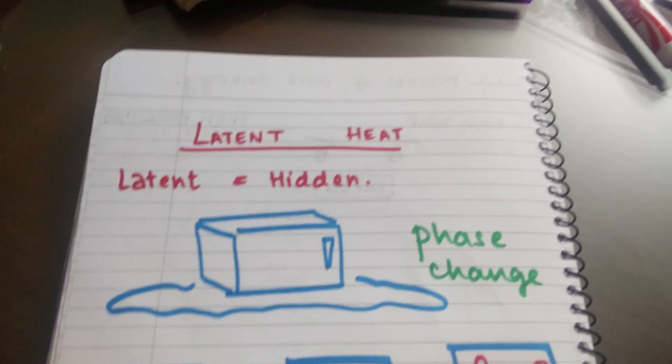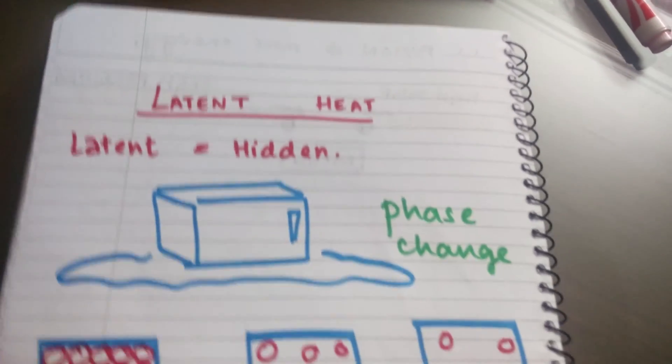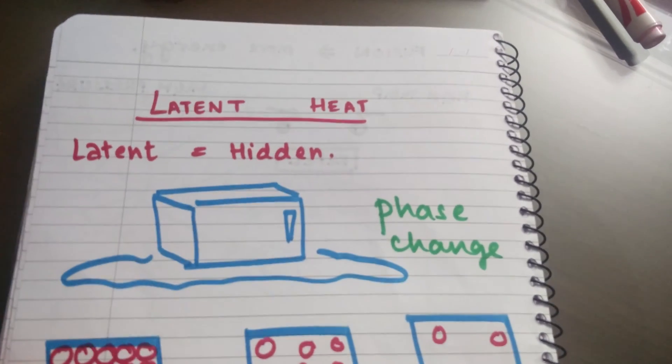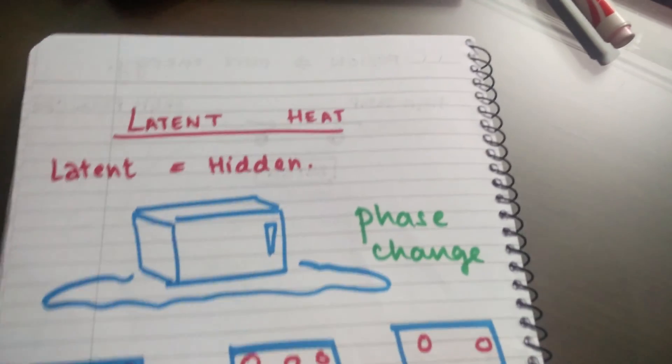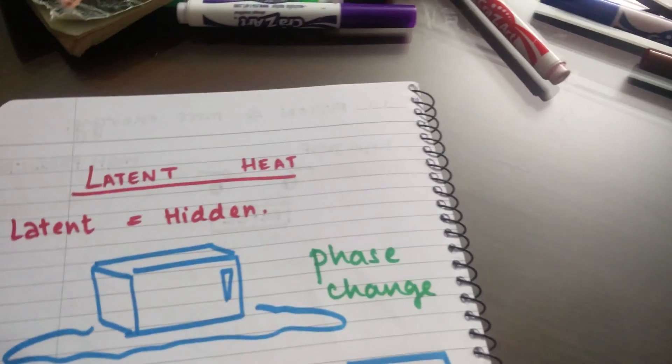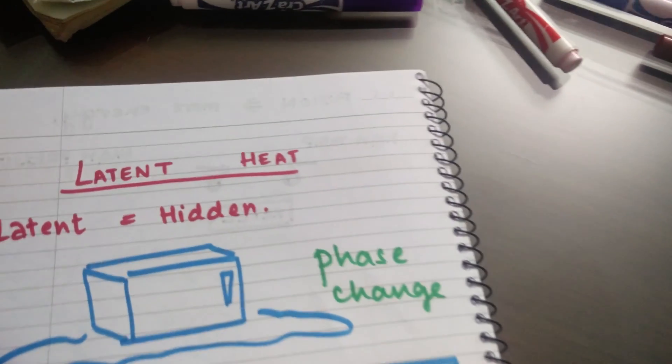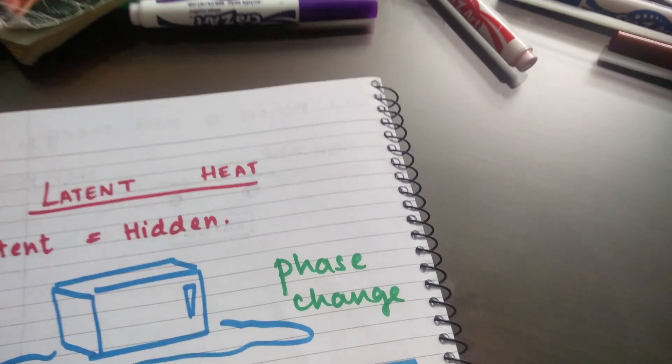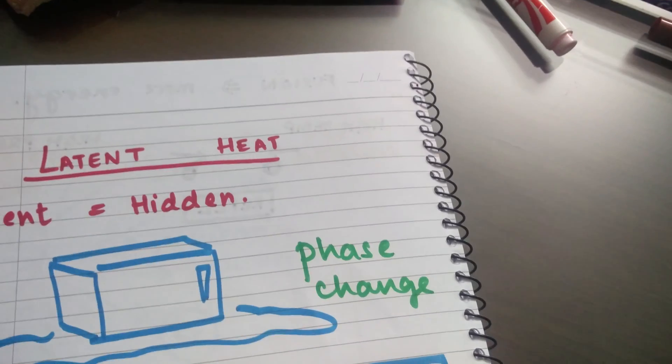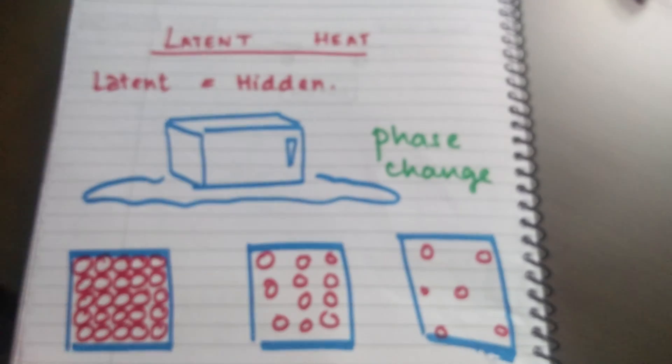Latent heat is related to phase changes. Whenever ice melts to form liquid water, you have solid to liquid changes. You have liquids evaporating to form gases, gases solidifying to form solids, liquids freezing to form solids, and condensation of gases to form liquids. Whenever there's a change in the state of matter or a change in phase, that is when latent heat comes into play.